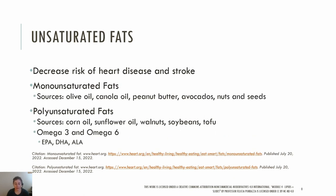Unsaturated fats include monounsaturated and polyunsaturated. Fat sources rich in unsaturated fatty acids tend to be liquid at room temperature because the carbon-carbon double bonds create bends in the carbon chain, making it harder for fatty acids to pack tightly together. Both polyunsaturated and monounsaturated can reduce the risk of heart disease and stroke. Monounsaturated fat sources include olive oil, canola oil, peanut butter, avocado, nuts, and seeds.